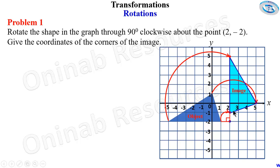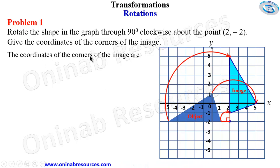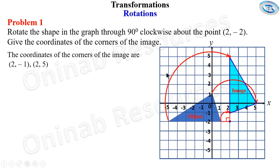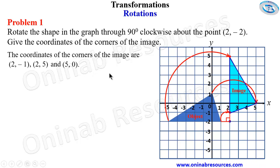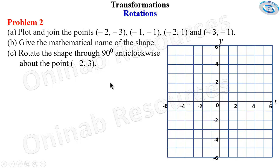These are the corners of the image. The first point here is (2, -1). The coordinates of the corners of the image are: (2, -1), here is (2, 5), and this last point is (5, 0). That is all for the solution of problem one.